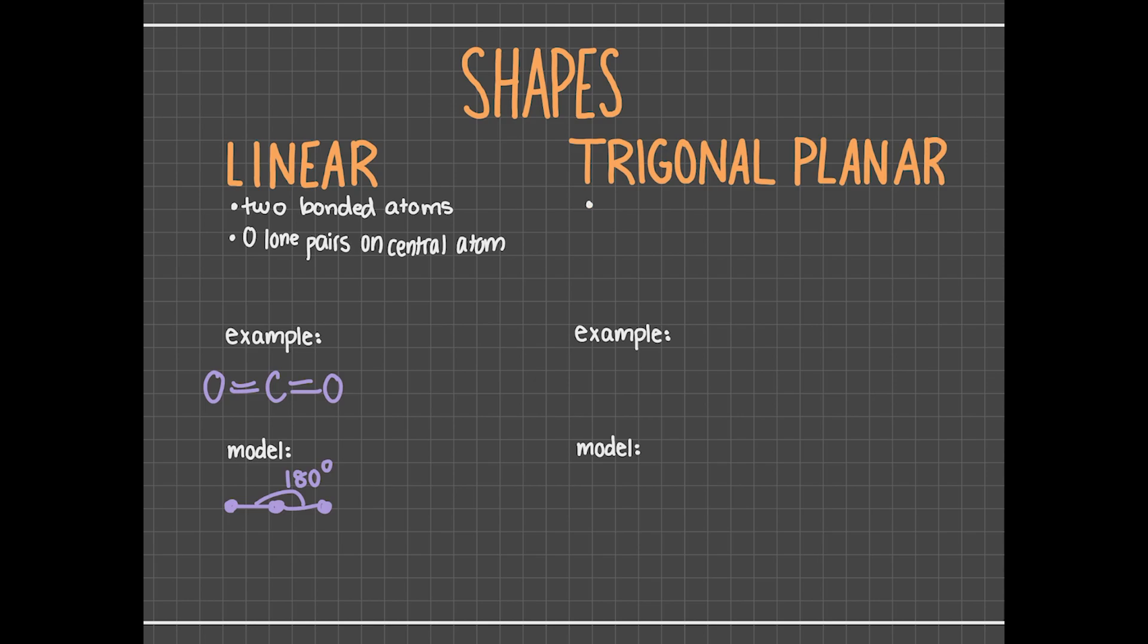Another shape we can predict is the trigonal planar. Trigonal planar molecules have three atoms bonded to the central atom and zero lone pairs on the central atom. An example of this is BF3, which has three fluorines bonded to a boron that doesn't have any lone pairs on it. We can draw this molecule's 3D shape like this. And since a circle has a measure of 360 degrees and there are three bond angles in a trigonal planar molecule, we divide 360 by 3 to get 120 degrees as the measure of each bond angle.